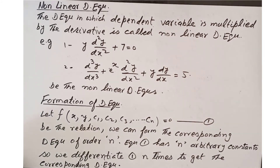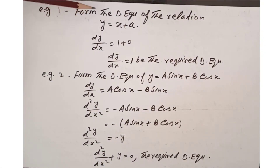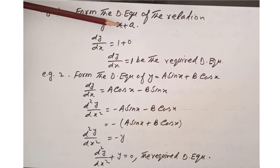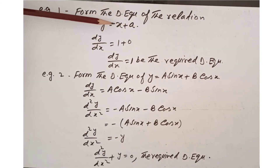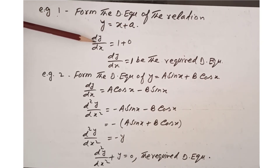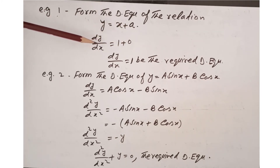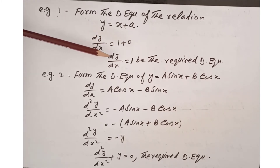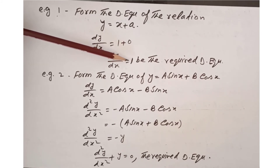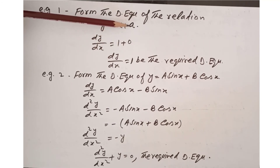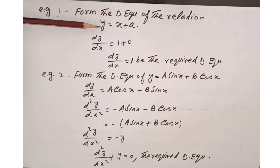For example, form the differential equation of the relation y equals x plus a, where a is an arbitrary constant. We differentiate once: dy over dx equals 1, since the derivative of x is 1 and the derivative of the constant a is 0. So dy over dx equals 1 is the required differential equation, which has no arbitrary constant.